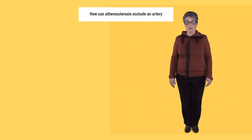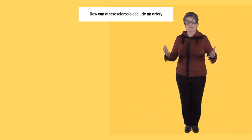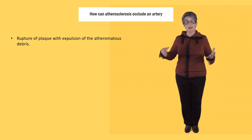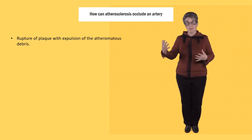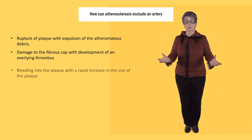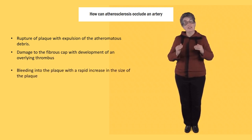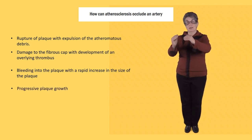So how does atherosclerosis occlude an artery? There are several ways. Firstly, plaque can rupture with expulsion of atheromatous debris and then a thrombus forms. Secondly, the fibrous cap itself can be damaged and a thrombus formed. Bleeding into the plaque can blow it up like a balloon — a rapid expansion in the size of the plaque. And then there's very slow progressive plaque growth that can occlude an artery.